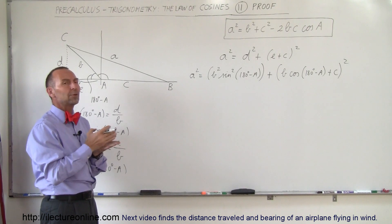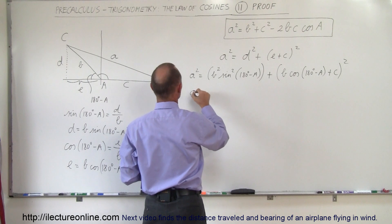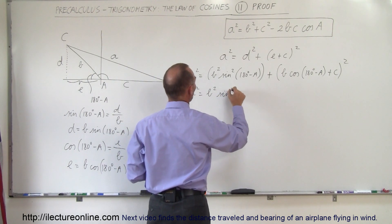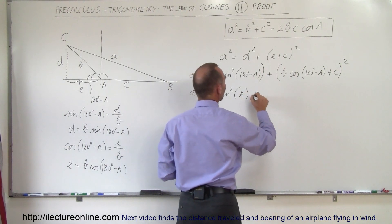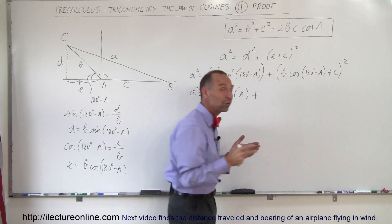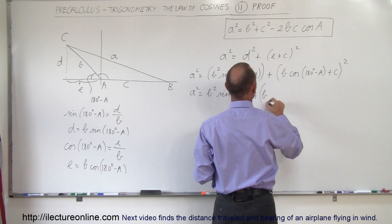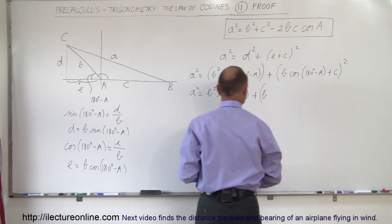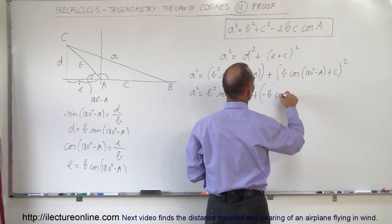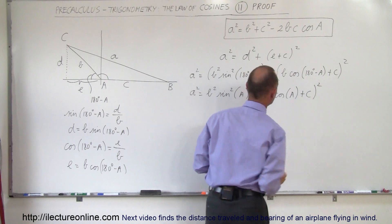What is the sine of 180 degrees minus A? That equals the sine of A. So we can rewrite this as a squared equals B squared times the sine squared of A. And what is the cosine of 180 degrees minus A? That happens to be minus the cosine of A. So this becomes minus B times the cosine of A, plus c, the whole quantity squared.